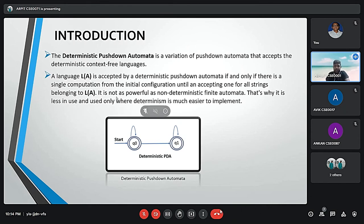First is introduction. The deterministic pushdown automata is a variation of pushdown automata that accepts the deterministic context-free languages. That means if it is accepted by a deterministic pushdown automata, if and only if there is a single computational path from the initial configuration until an accepting state for all strings. It is not as powerful as non-deterministic finite automata, so it is less used and used only when determinism is much easier to implement.